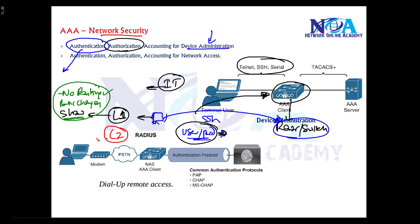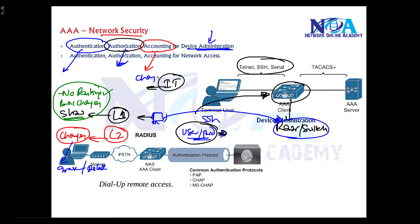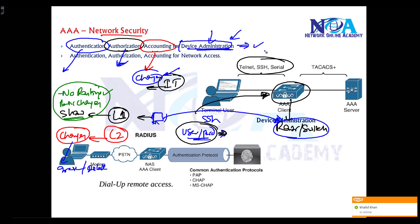If the user belongs to level two, I want to give some additional permissions — he can do all changes, but he cannot erase or delete any configurations. So for device administration, we need to authenticate our users for accessing devices remotely, give permissions on what they can and cannot do based on different user accounts, and finally, we also need to keep track of what changes he made, when he logged in, what time he logged in, what IP address or which device he used to log in.